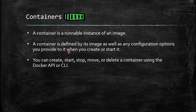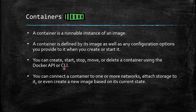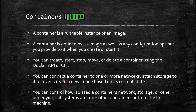You can create, start, stop, move, and delete containers using either the Docker API or Docker CLI. You can connect a container to one or more networks, attach storage to it, or even create a new image based on its current state. You can also control how isolated a container's network, storage, and other resources are from other containers or the host OS.